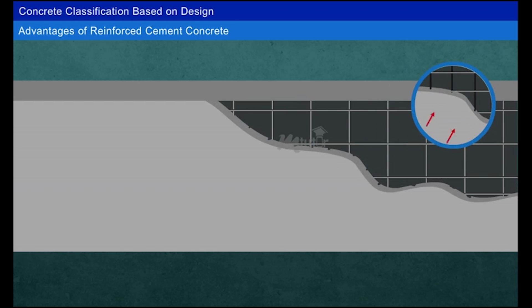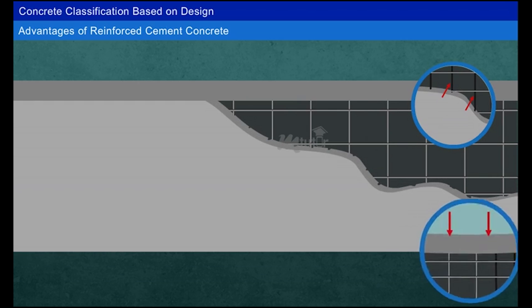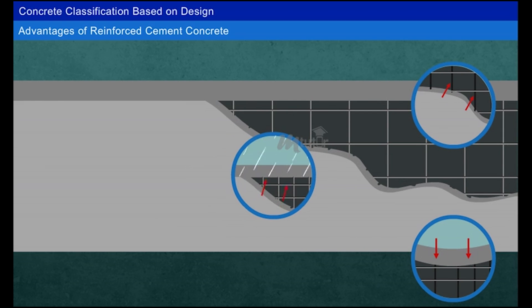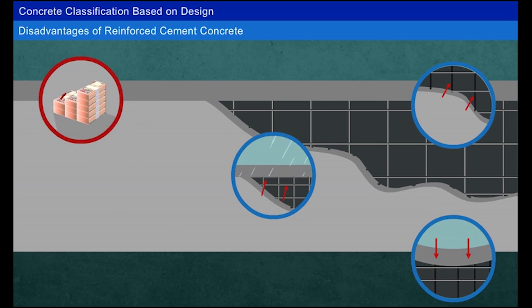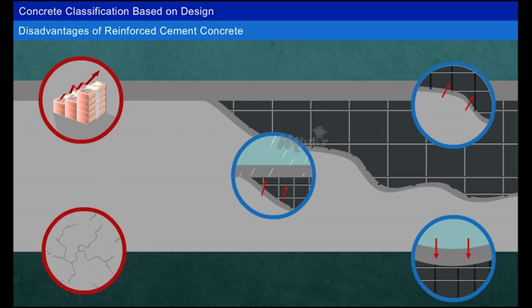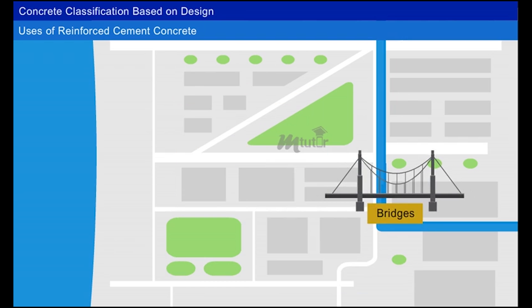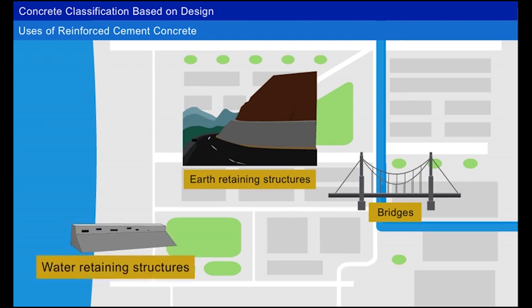Advantages of reinforced cement concrete: bonding between steel and concrete is very good, so excess stress acting on concrete is transferred to the steel; compressive strength is high; and durability is very high. Disadvantages: cost is higher due to the high cost of steel bars, and shrinkage may occur. RCC is used as a component in residential and commercial buildings especially for slabs, beams, and columns, and also for bridges, earth-retaining structures, and water-retaining structures.